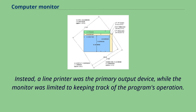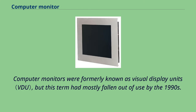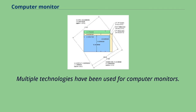Instead, a line printer was the primary output device, while the monitor was limited to keeping track of the program's operation. Computer monitors were formerly known as visual display units, but this term had mostly fallen out of use by the 1990s. Multiple technologies have been used for computer monitors.